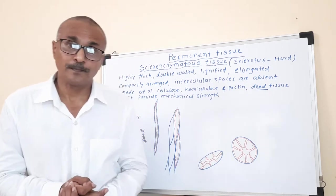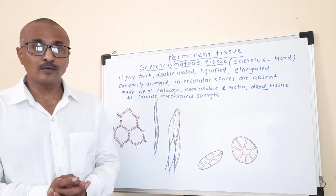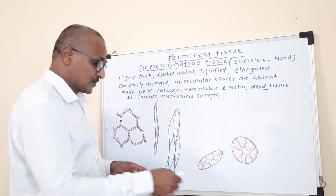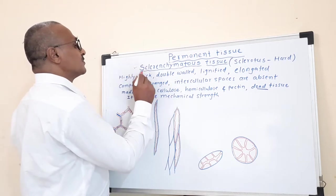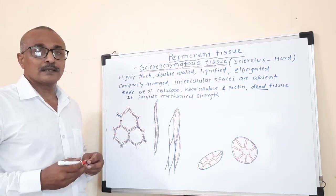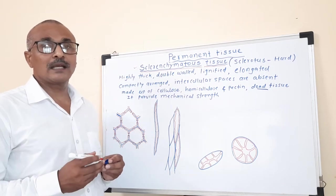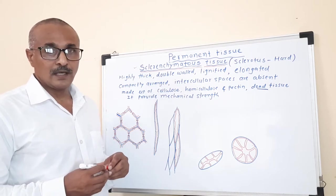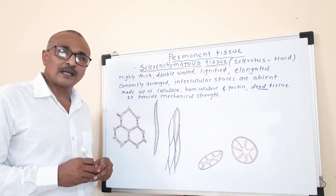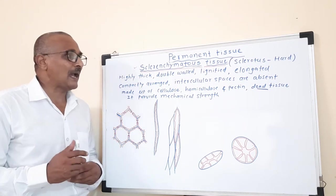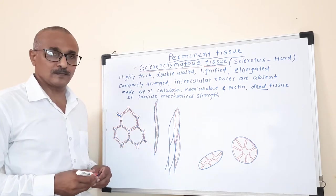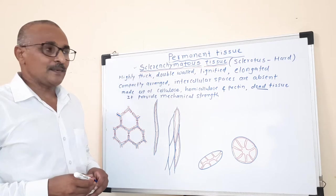Now the third type of simple permanent tissue is the sclerenchymatous tissue. The word sclerenchyma is derived from a Greek word, 'sclerotus', which means hard or tough. Sclerenchymatous tissues are basically hard and tough in nature due to lignification, and that's why the name is derived from the word sclerotus.